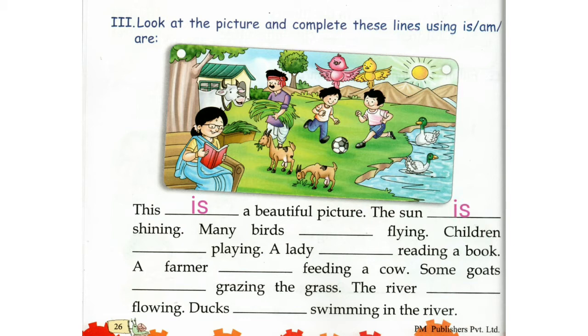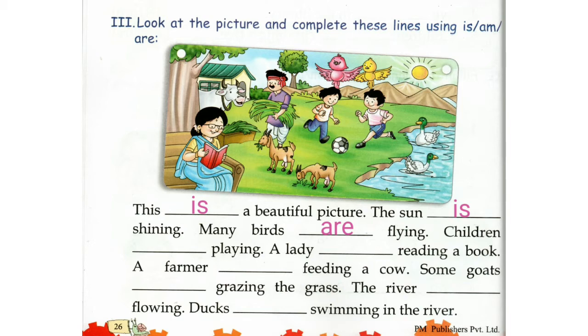Many birds. How many birds do you see in the picture? Two birds. Since it's two, it's a plural noun. We will use Are. Many birds are flying.